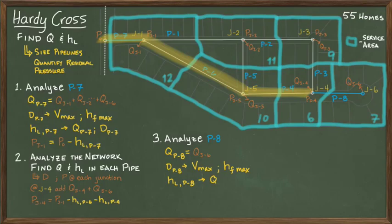And just as before, the head loss is found using the actual pipeline diameter. The final step is to compute the residual pressure at junction six by subtracting the head loss from pipe eight and the residual pressure found at junction four.